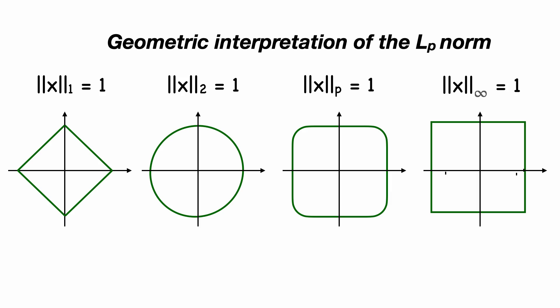So in general, the vector satisfying the equation Lp norm equals 1 for p ranging from 1 to infinity follows this continuous change from a tilted square to a circle to a squircle to a square, all the time increasing in size.